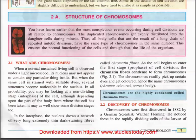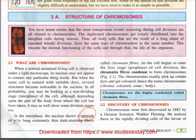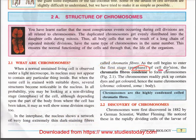Some important terms to remember. The first is chromatin fibers. During interphase, the nucleus shows a network of very long, extremely thin, dark-staining fibers called chromatin fibers. As a cell begins to enter the first stage — prophase — of cell division, the chromatin fibers condense to form chromosomes.